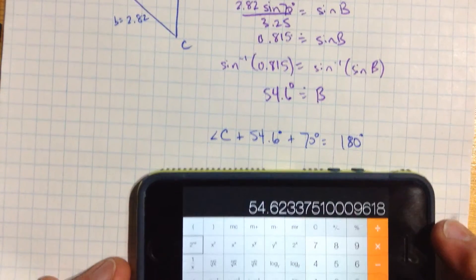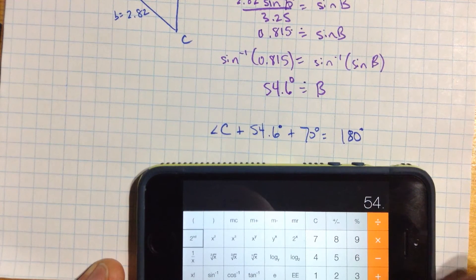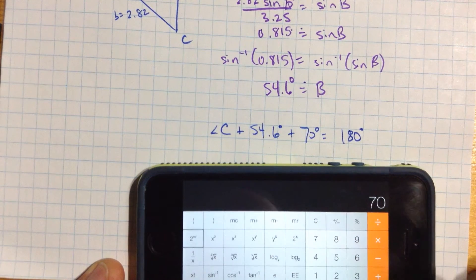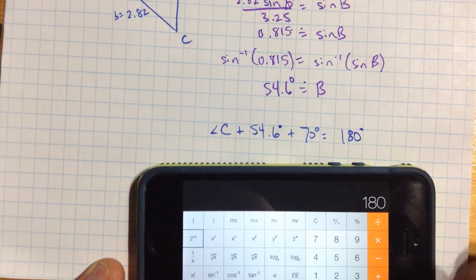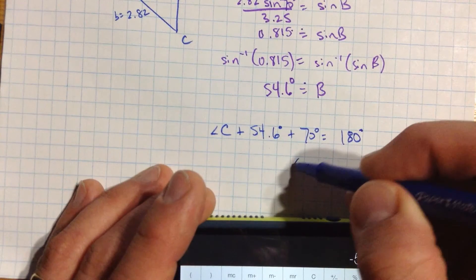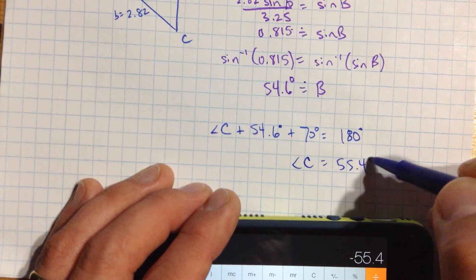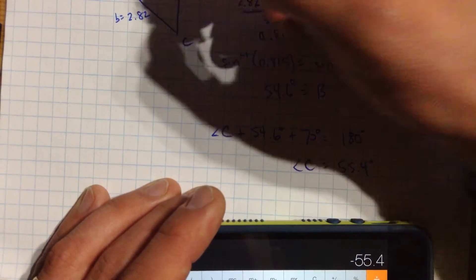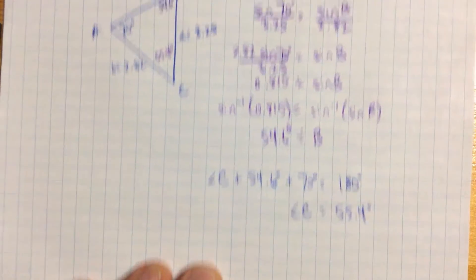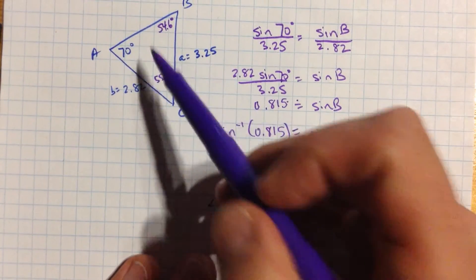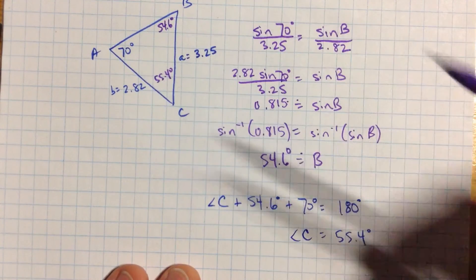So if you want, grab a calculator, 54.6 plus 70 is 124, and I guess I should have taken all that away from 180. I get that angle c is 55.4 degrees. Okay, I can write that in now. Those are really close. 55.4 degrees. That'll mean then that this side length up here should be very close to this side length here, because this is almost an isosceles triangle.